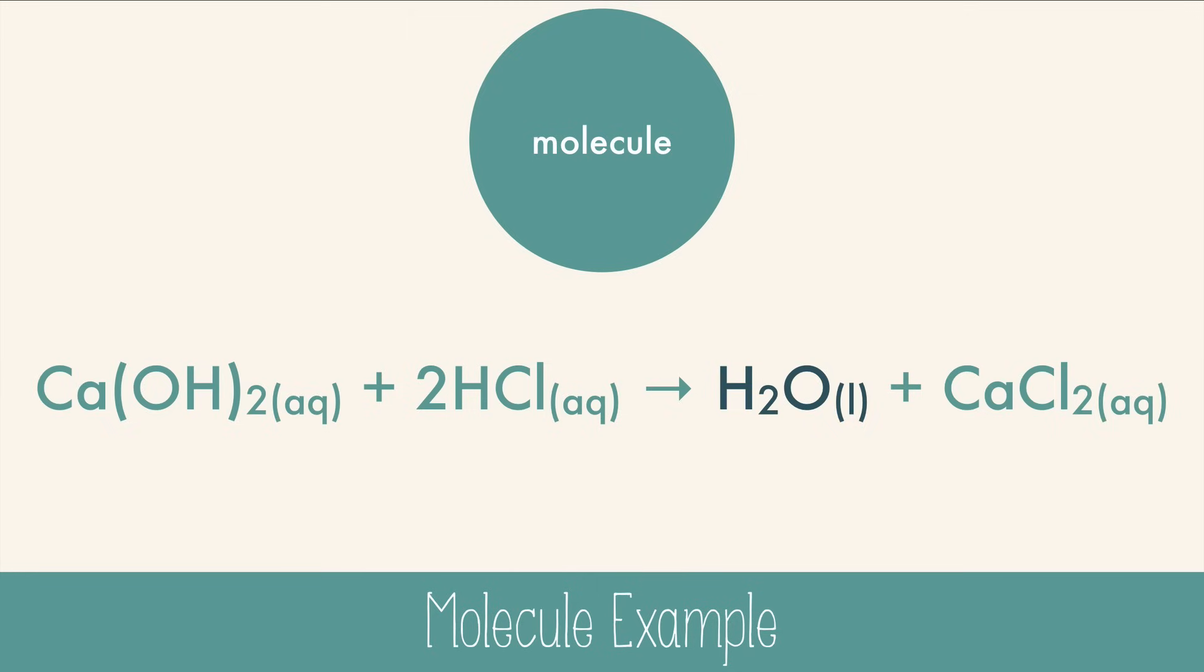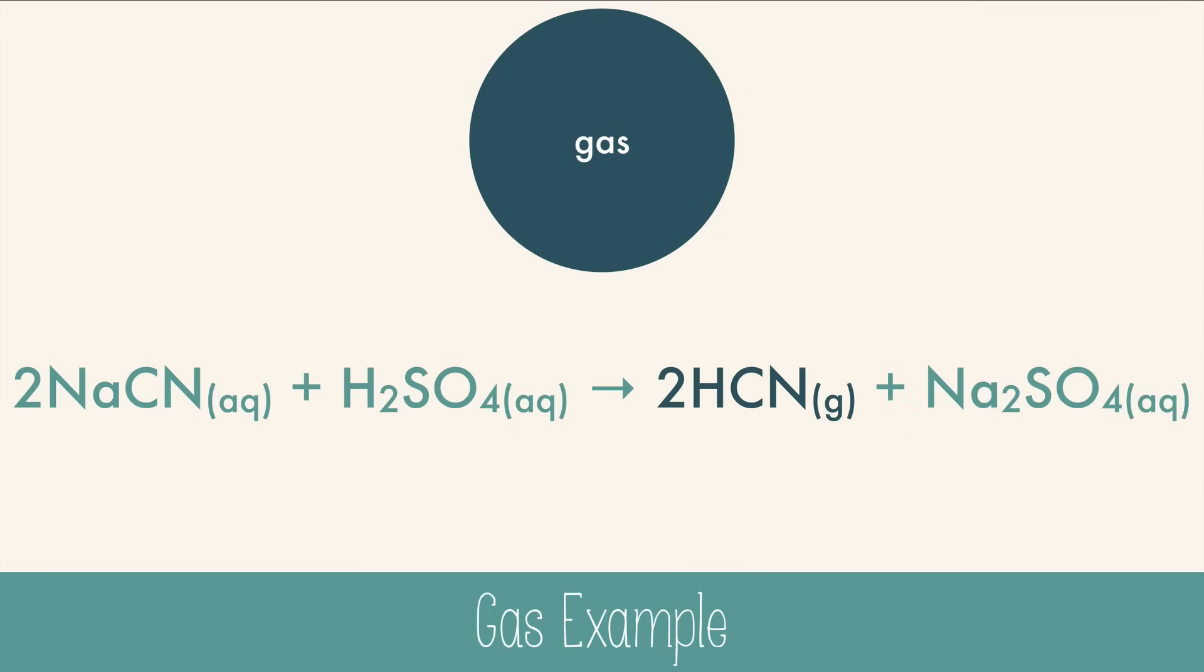Lastly, another possible product from a double replacement reaction is a gas. Again we start with an aqueous substance, sodium cyanide, sulfuric acid, but form a gas as a product, poisonous hydrogen cyanide gas. Don't try this one at home, folks.